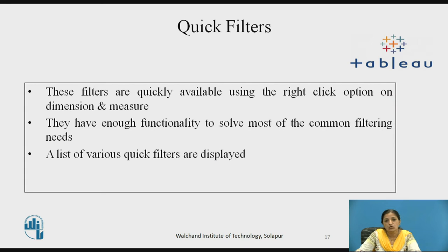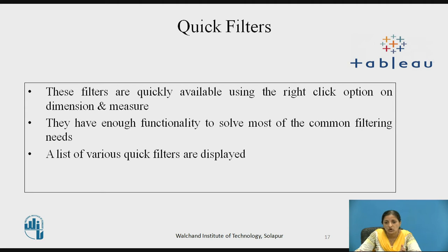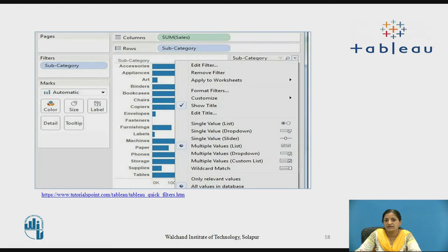Now we will move to quick filters. These filters are quickly available using the right-click option on the dimension or measure on which you want to apply the filters. When you right-click on any dimension or measure, a list of filters is provided. These have enough functionality to solve most of the common filtering needs. A list of quick filters is displayed as shown in the screenshot.